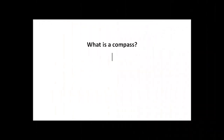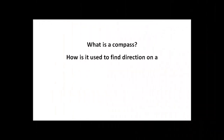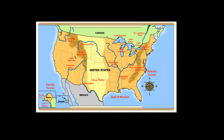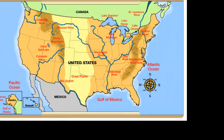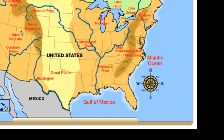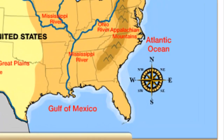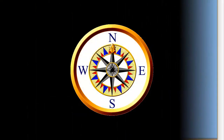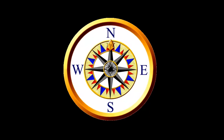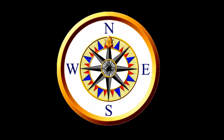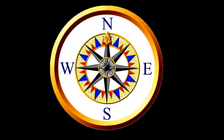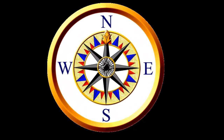What is a compass? How is it used to find direction on a map? A compass is a tool that shows which direction is north, east, south, and west on that specific map. Remember, the four words used to give direction are north, east, south, and west.